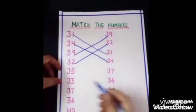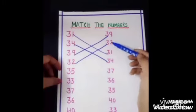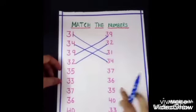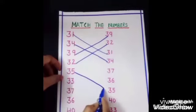Next number is 35, 35. Where is 35 in another line? Where is 35? Is it 35? This is yes. So match it.